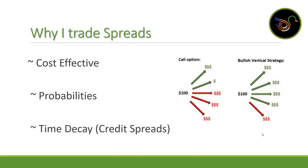The last reason I like spreads — and this applies specifically to credit spreads — is that time decay is on your side. With a regular call option, if the stock doesn't move, theta just kills your contract's premium down to zero. With credit spreads, it's the complete opposite: theta works for you. As time goes on, you're collecting that premium into your account. The stock doesn't even have to go anywhere for you to make money.